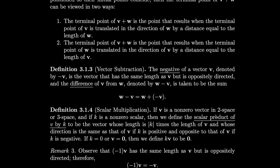We can also do scalar multiplication. If v is a non-zero vector in 2-space or 3-space and k is a non-zero scalar, then we define the scalar product kv to be the vector whose length is the absolute value of k times the length of v, and whose direction is the same as v if k is positive, and opposite if k is negative. If k is zero or v is zero, then kv is the zero vector. So for example, here's v — this could be 2v: same direction, just twice as long. kv is just however much you want to scale by k.